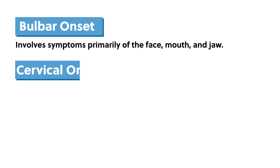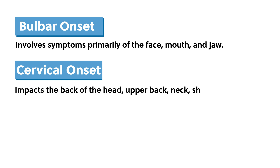Cervical onset impacts the back of the head, upper back, neck, shoulders, and arms, resulting in weakness, stiffness, cramping of fingers, and wrist drop.